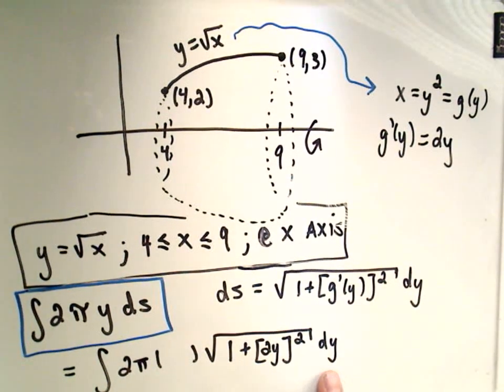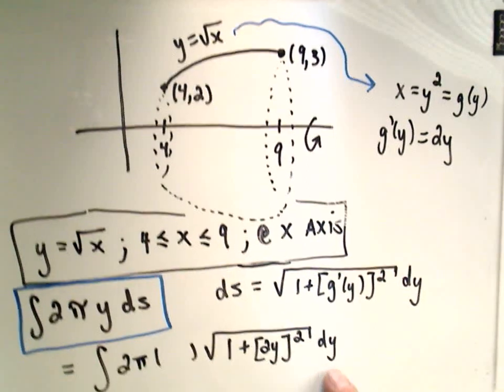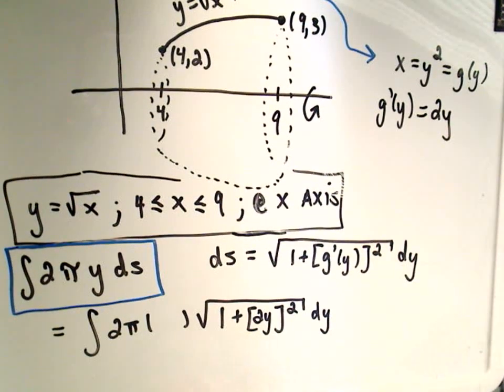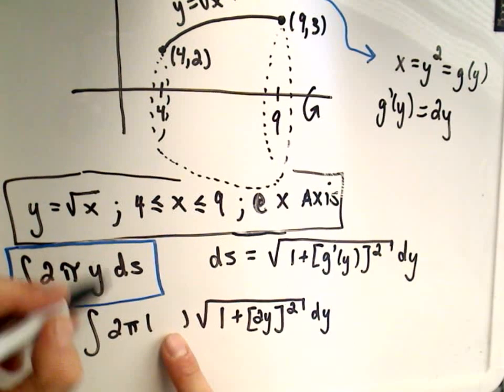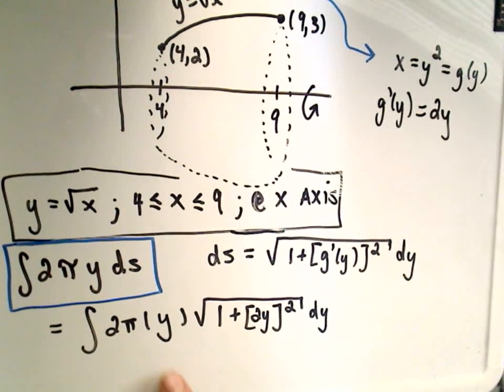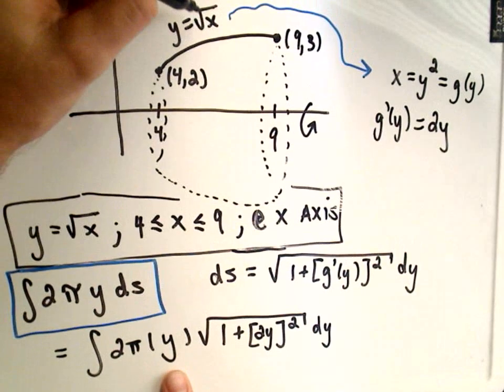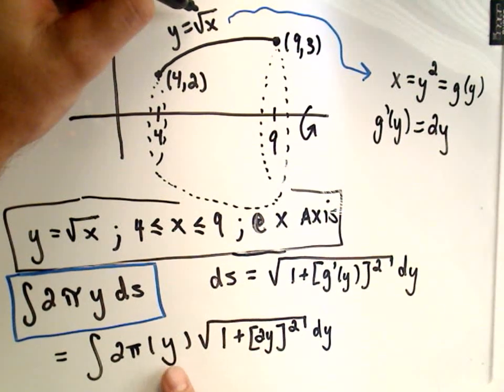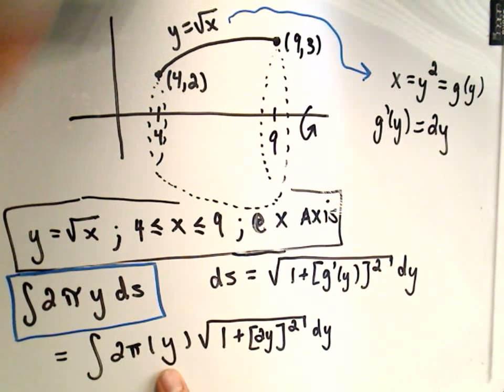Again, now, we're integrating this one with respect to y, so that means all of my integrands should only have y's. The formula says it should be 2 pi y. Well, I need to just drop the y in there. And this illustrates the difference between using the other technique. In the last one, we had to replace the y with its equivalent x version. That is, we had to put square root of x in here when we integrated with respect to x.